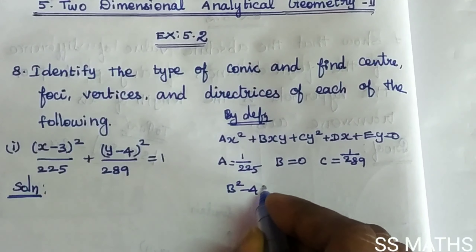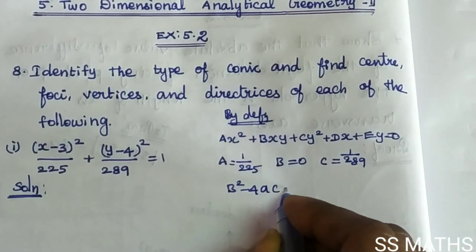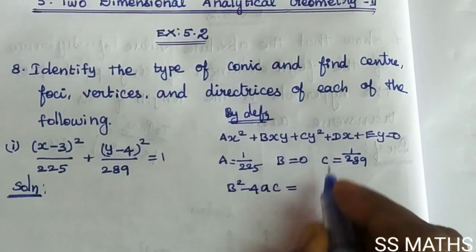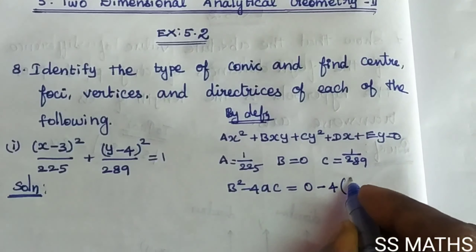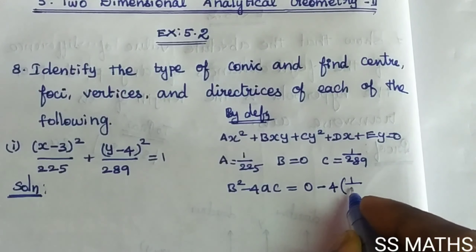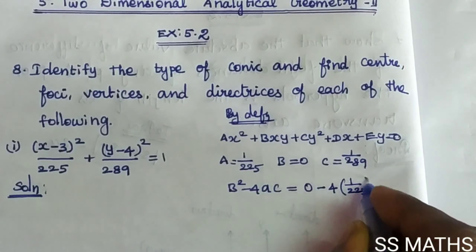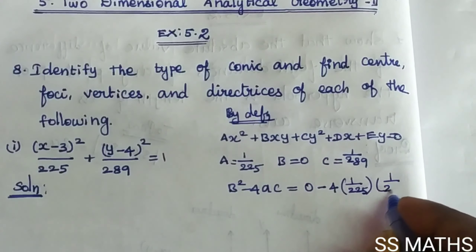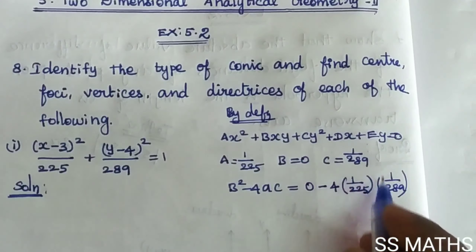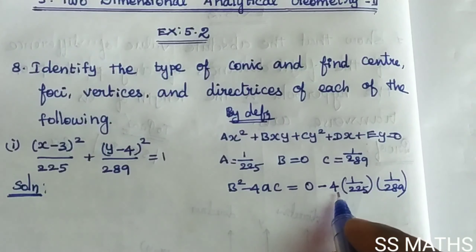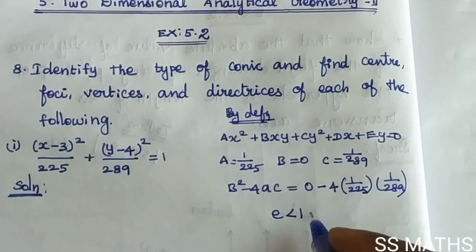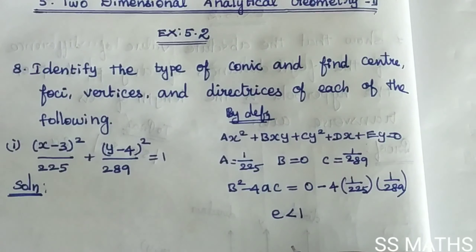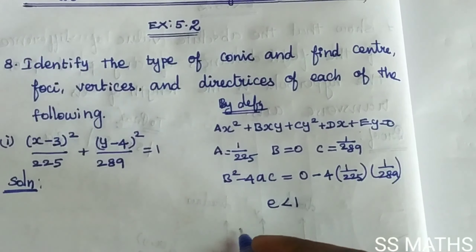Now find b² minus 4ac. b = 0, so 0² = 0, minus 4 times a (= 1/225) times c (= 1/289). This product is negative. So eccentricity e is less than 1, which means it is an ellipse.